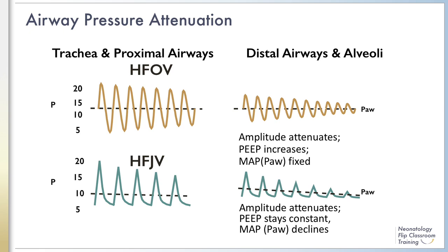Both methods of high-frequency ventilation have declining amplitude of the pressure wave as they move distally through the airways. In the trachea and proximal airways, a large portion of the pressure is delivered, but as gas moves into the distal airways and alveoli, this is significantly dampened. The sinusoidal shape of the high-frequency oscillating ventilator wave means that mean airway pressure stays the same as amplitude decreases, whereas mean airway pressure decreases with the jet ventilator due to the spiked shape of the pressure waves.